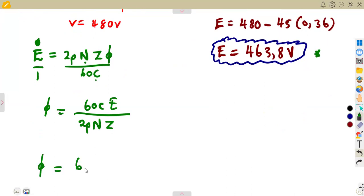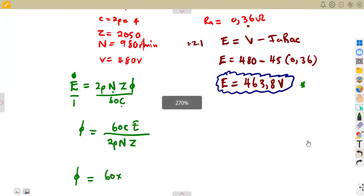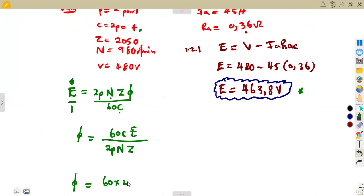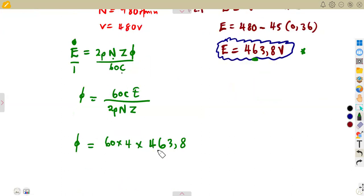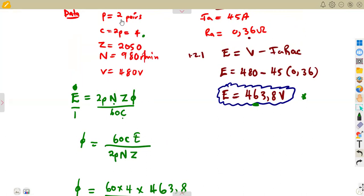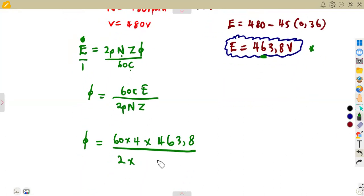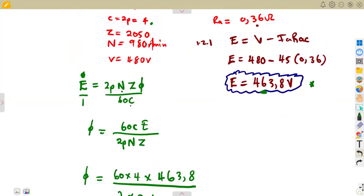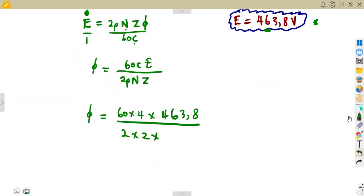So that's 60 times C, the number of our parallel paths which is 4, times E—remember we calculated our E here, 463.8—then over 2P times N times Z. 2 times P, the number of pole pairs which is 2, then times the N, the speed 980, times the armature conductors which was 2050.